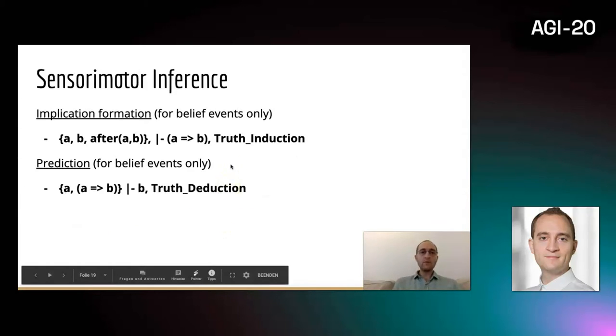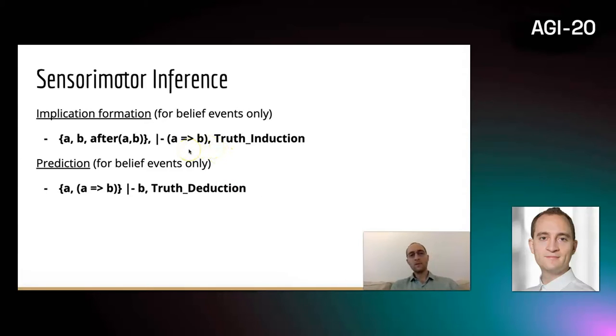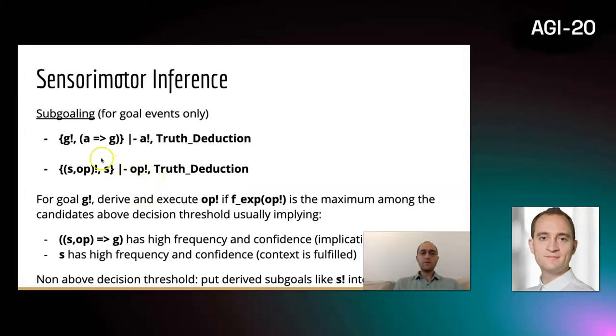For sensorimotor inference, there are different responsibilities like to form implications. When event A is observed and event B comes after A, if this pattern is observed, it can infer that A leads to B. If this pattern is observed more often, it can form a revision, a stronger relationship that A usually leads to B. Also prediction is possible: if this relationship is already established and a new event A is observed, it can predict B. A similar thing can happen with goals. If there is a goal G and there is a relationship A leads to G, then the system can deduce to want A. Also, if the system wants to execute an operation in a certain context and the context is already fulfilled, it can derive and execute the operation.